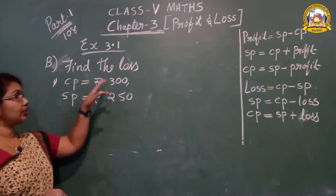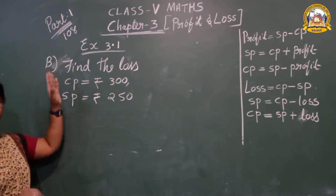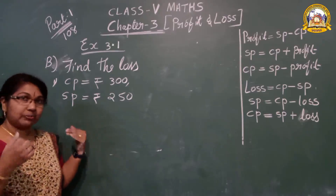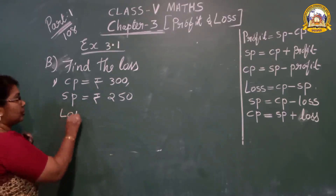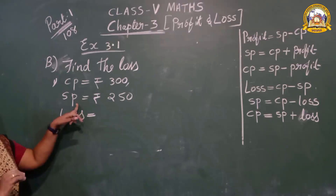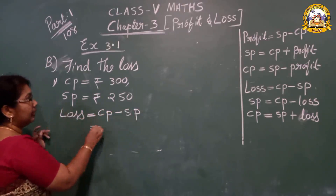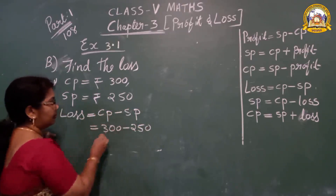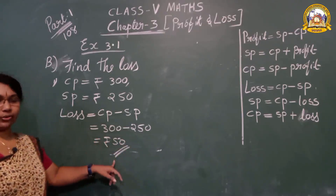When CP is greater than SP, there is a loss. When SP is greater than CP, there is profit. Loss means we face a loss; profit means we get extra money. Loss formula: CP minus SP. So 300 minus 250 equals 50 rupees — 50 rupees is the loss.